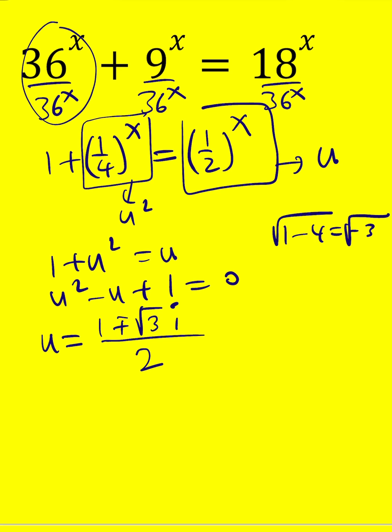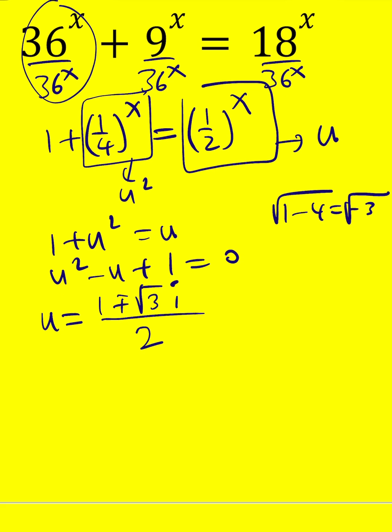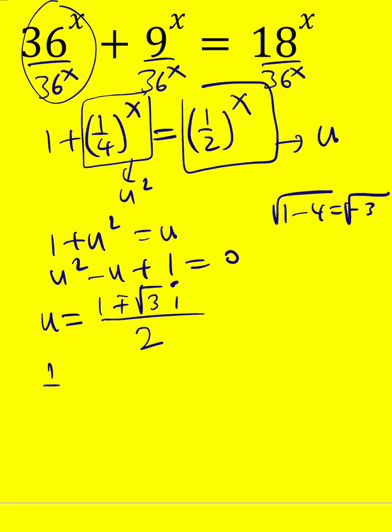So there are two solutions. Let me just show you one because the other one is very similar. So set 1 half to the power x equal to u, which you can write as 1 plus root 3i divided by 2. Yes, that's a complex number.